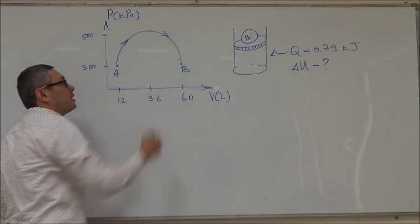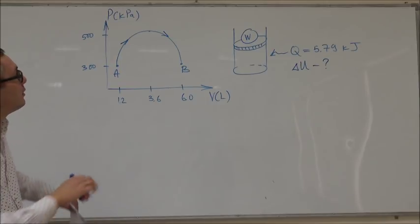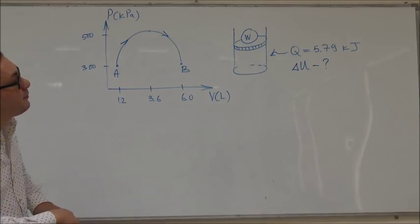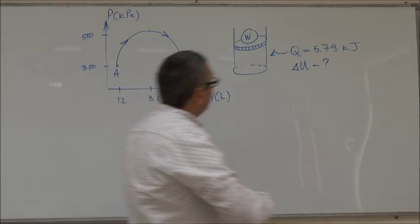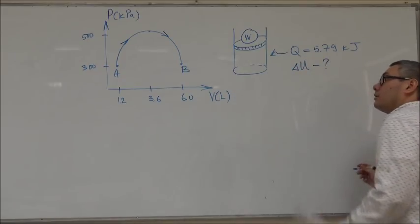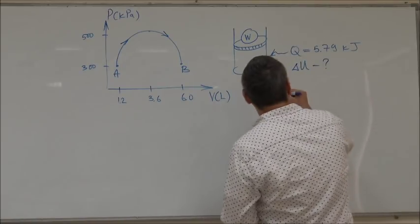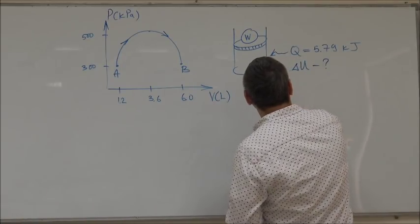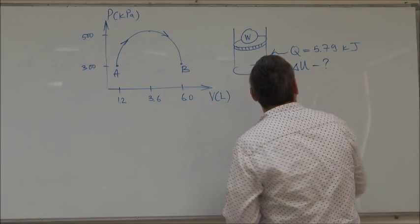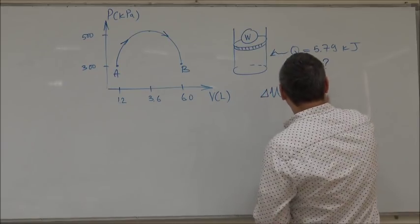So the question is what is the change in the internal energy of that ideal gas? We can write the equation of the first law of thermodynamics which looks like this, so this change in internal energy is equal to amount of energy which was transferred plus the work.